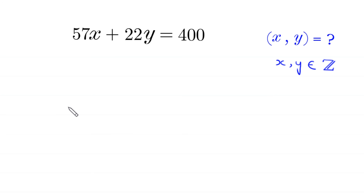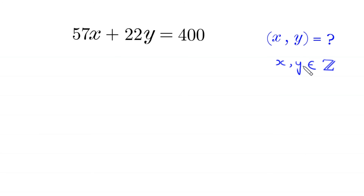Hello everyone. You are welcome to how to solve this very nice Diophantine equation: 57 times x plus 22 times y is equal to 400. Our job is to find all possible values of x and y such that x and y are integers. So let's start.